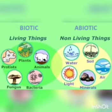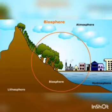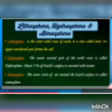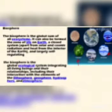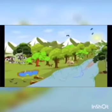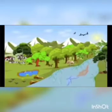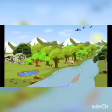Biotic refers to living things and abiotic refers to non-living things — that is hydrosphere, atmosphere, and lithosphere. When air, water, and land merge, they form a biosphere. Biosphere is the zone of the earth where land, water, and air — that is lithosphere, hydrosphere, and atmosphere — interact with each other to support life.